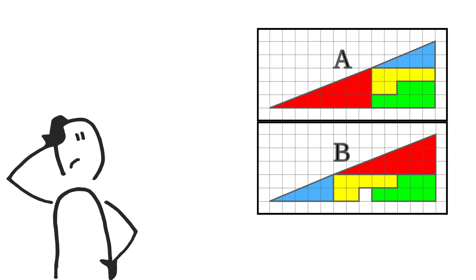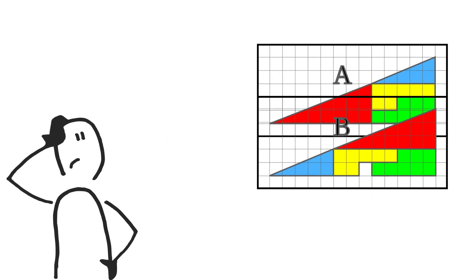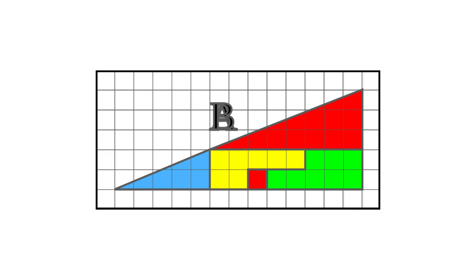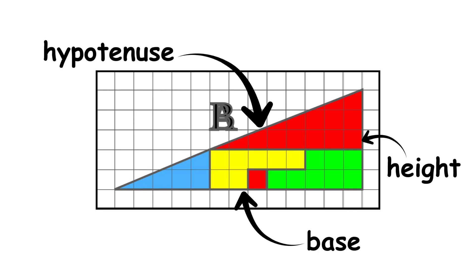The key to the puzzle lies in the illusion that both configurations form a single right triangle. Visually, the outlines appear to match. The base, height, and hypotenuse seem to be aligned.